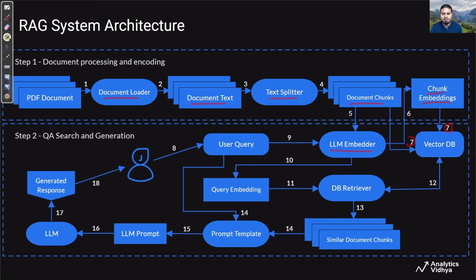Once we have the chunk embeddings, the next step is to store them in a vector database. As you can see in this step, we don't just store the embeddings — we also need to know which document chunk each embedding represents. So we store every document chunk along with its corresponding chunk embedding in a vector database. In our application, we will be using ChromaDB, but you are free to use other vector databases. This concludes the first step — document processing and encoding — where we load documents, split into chunks, encode into embeddings, and store in a vector database with metadata like page number and source file.